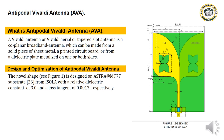Design and Optimization of Antipodal Vivaldi Antenna. The normal shape, designated CPJ1, is designed on Astra MT773 substrate from Isola, with a relative dielectric constant of 3.0 and a loss tangent of 0.007.